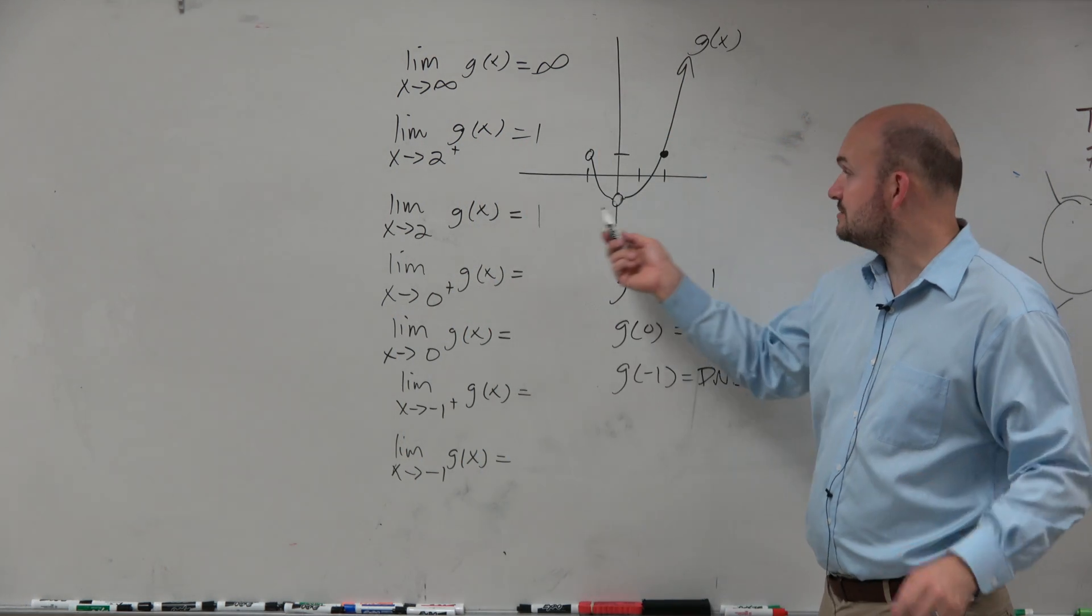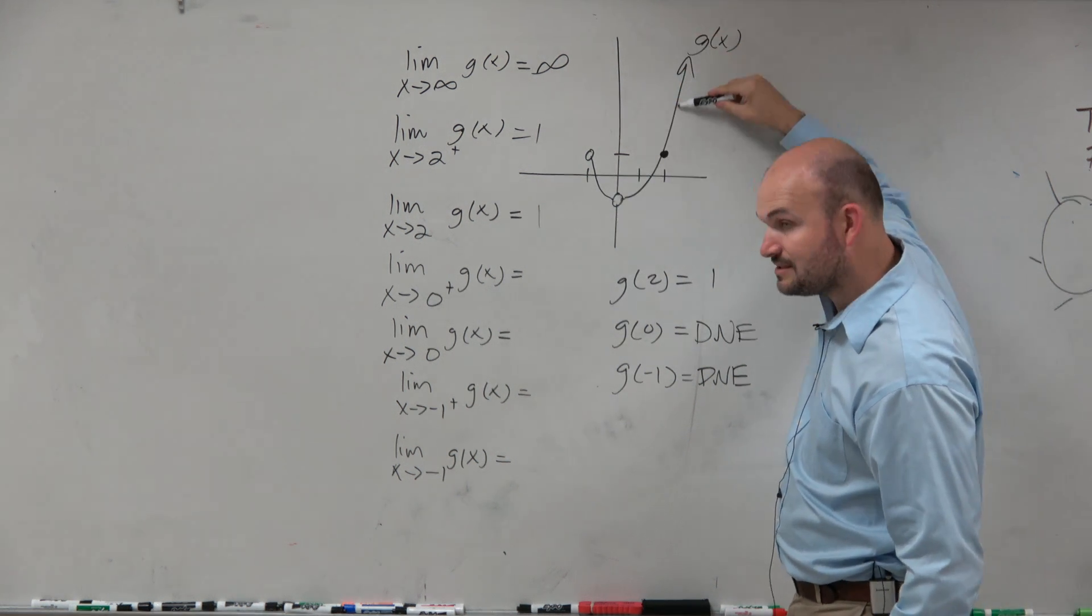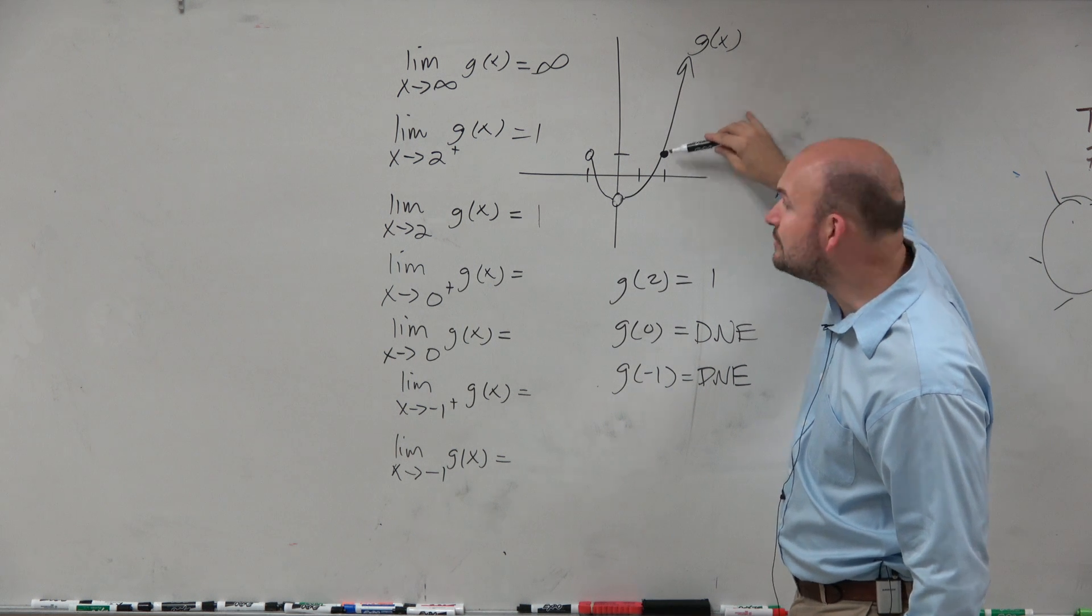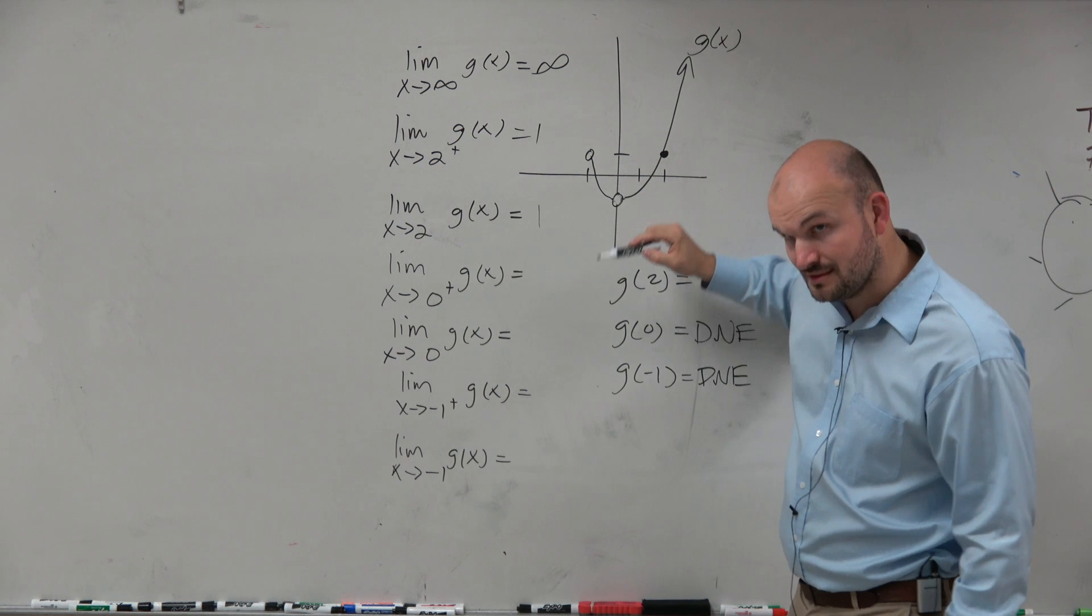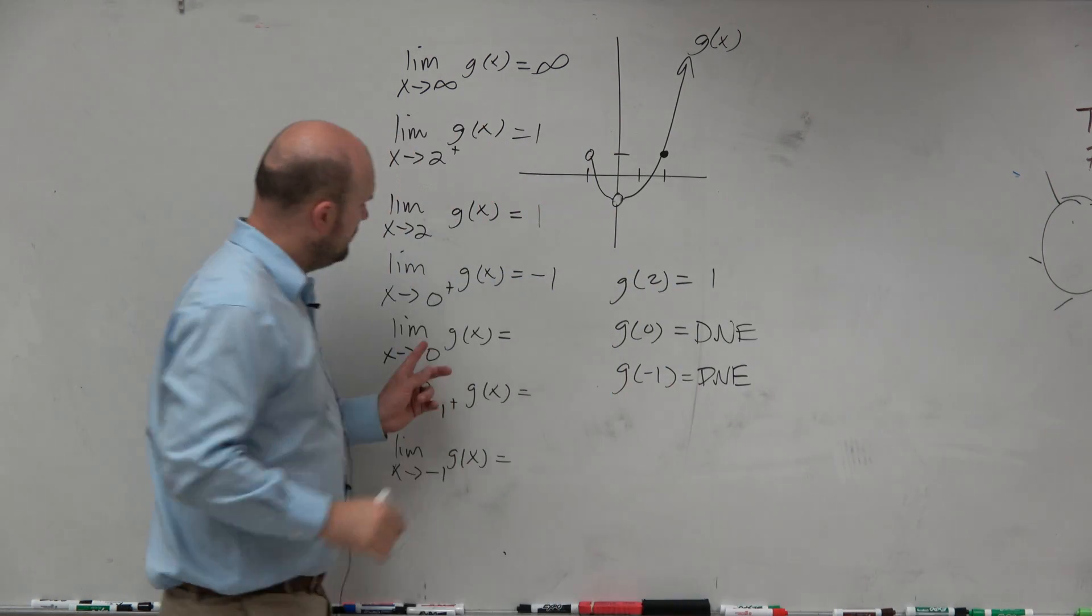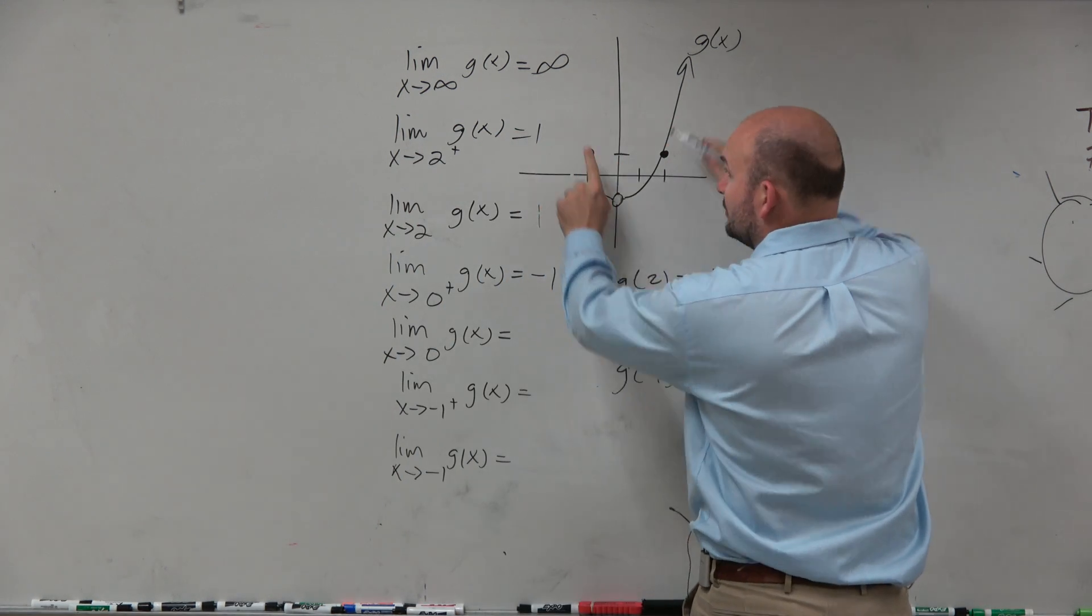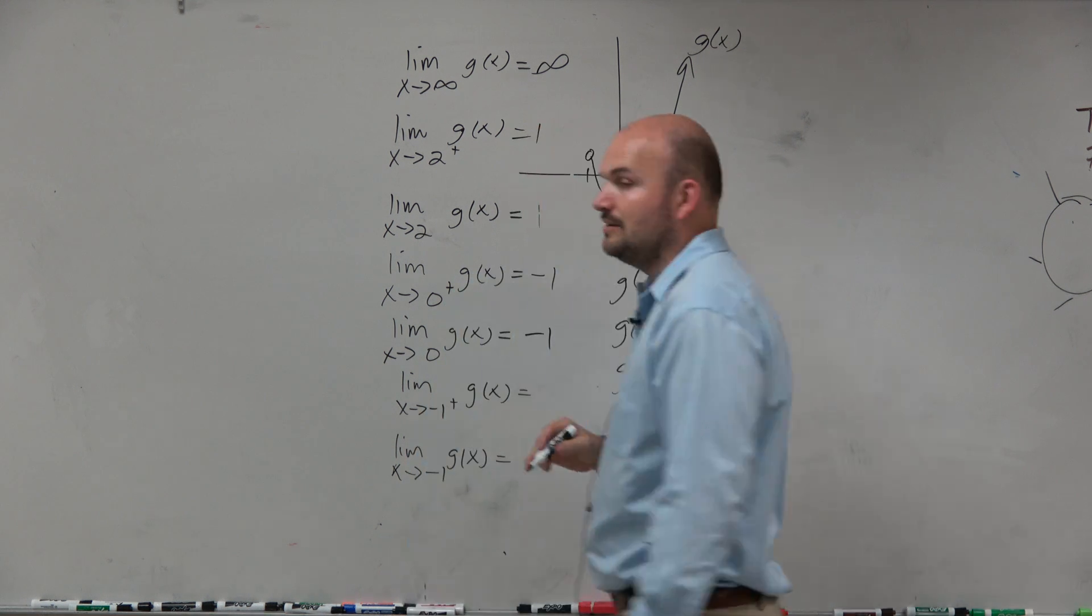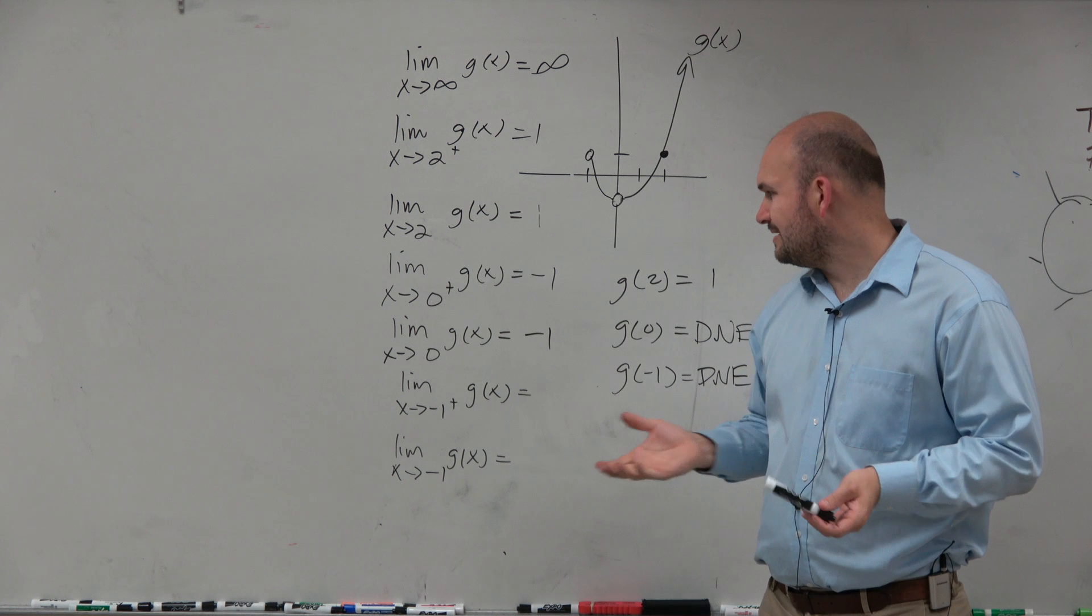So the next one is 0 from the right. So you can see 0 from the right. As we're coming to 0 from the right, we know 0 is undefined, right? But what value is it getting really close to as we get really close to 0? Negative 1. What about as we approach 0 from the left and the right? What value are we getting really close to? Negative 1.